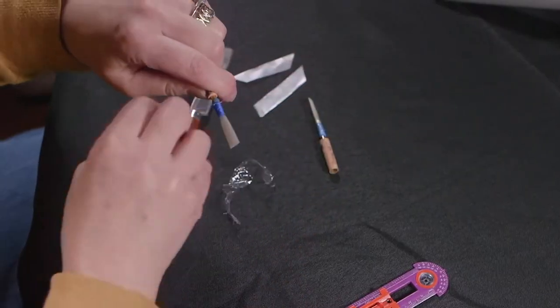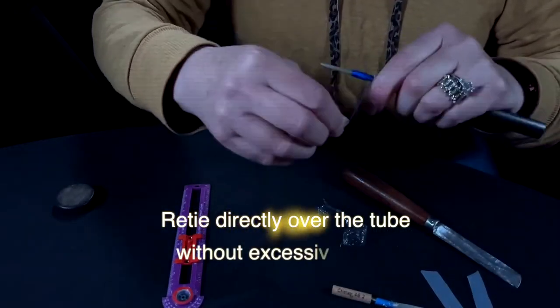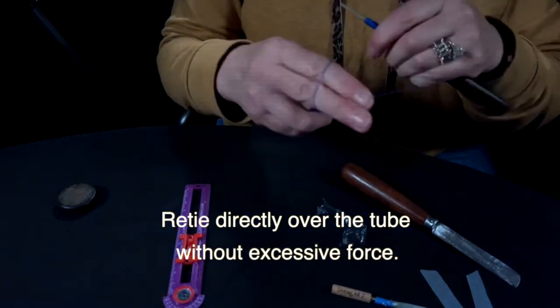Measure, and then retie directly over the heat shrink tubing as you would a conventional cane reed.